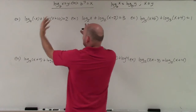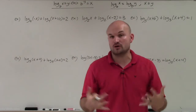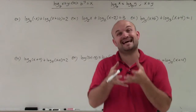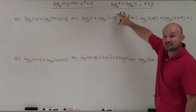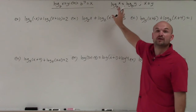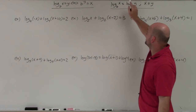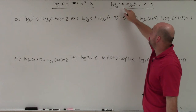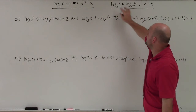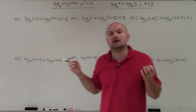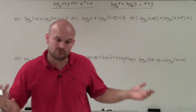If we have the logarithms on the same side, we can still use the rules of logarithms to condense down to one logarithm. And if we have a logarithm on both sides, we can use the one-to-one property: log base b of x equals log base b of y. Since the bases are the same, you can just set the values of each logarithm equal to one another.